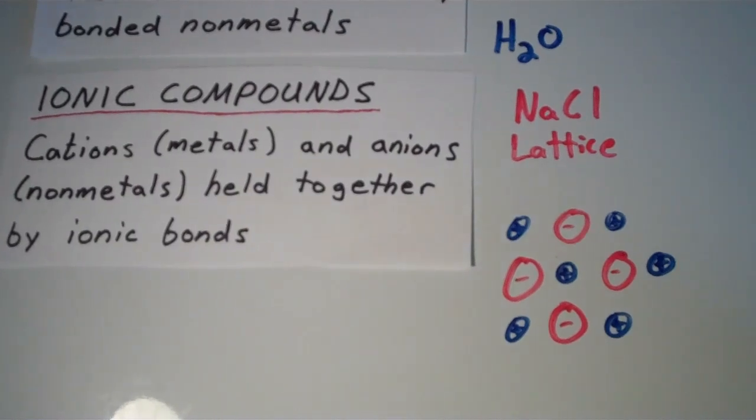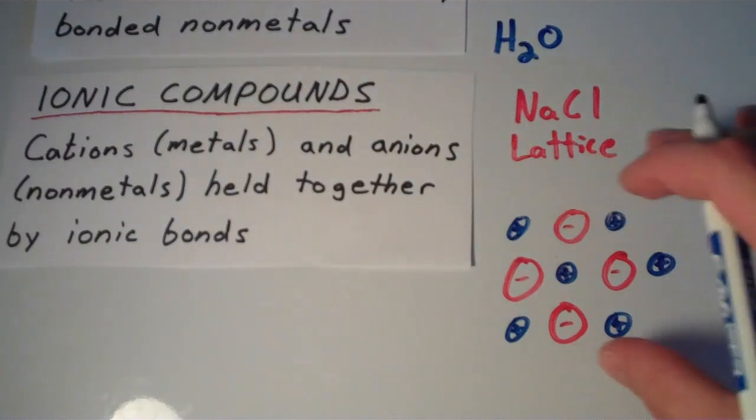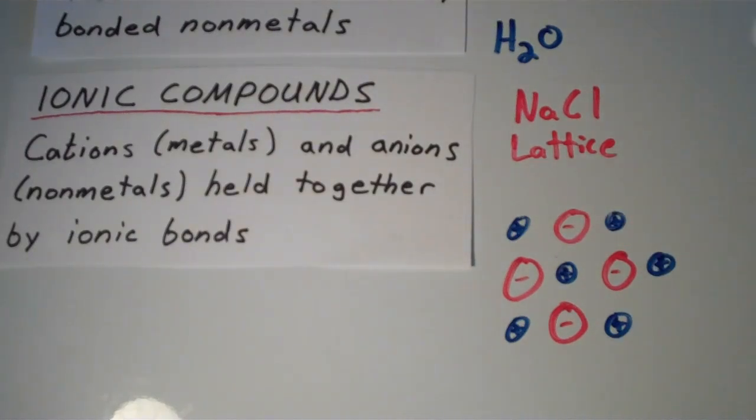There's no one sodium ion that bonds ionically to one chloride ion. Instead, we have this infinite array. And this goes on throughout the entire solid, and it's three-dimensional. We have this infinite array that we call a lattice. So in contrast to molecules like water, these aren't little discrete units. The formula unit just shows the smallest ratio of cations and anions.